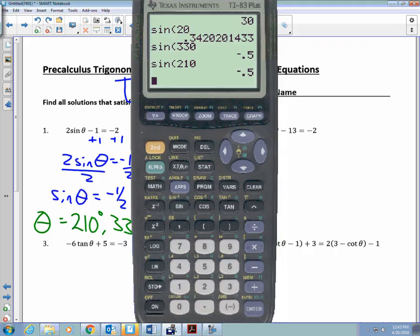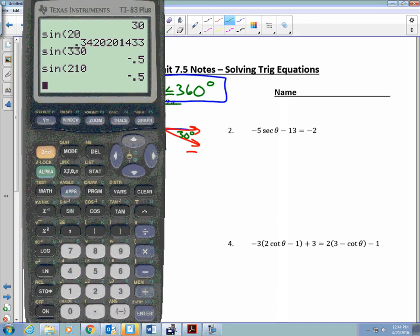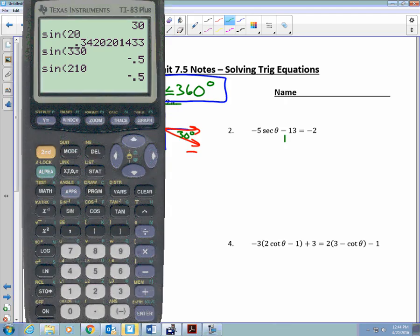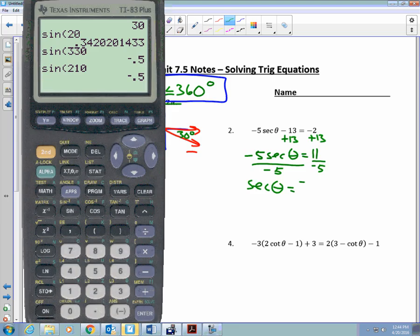Let's try another example. Problem number two. -5sec(θ) - 13 = -2. What do I do? Add 13. Divided by negative 5, sec(θ) = -11/5. Oh, no. I don't have a secant button on my calculator. Cosine. Tricky, tricky, tricky. That's what we do.